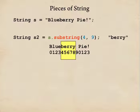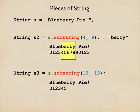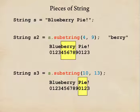Let's take a look at another example. Suppose I ask for the substring starting at 10, ending just before 13. There's the variable again. Let's number all the positions. Starting at 10 and ending just before 13 gives us those three characters, and so the result is the new string 'pie'.